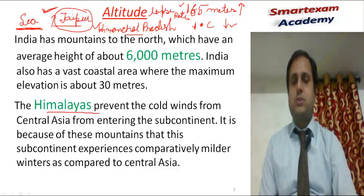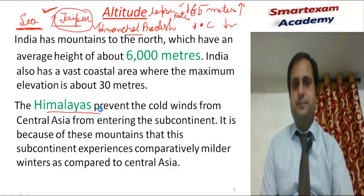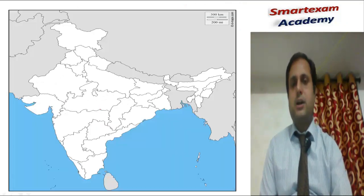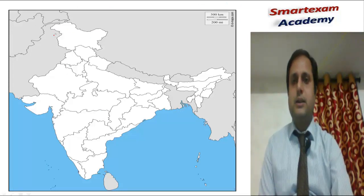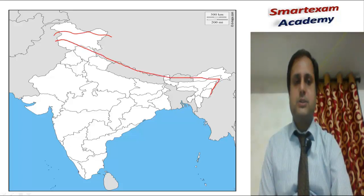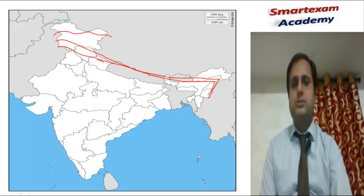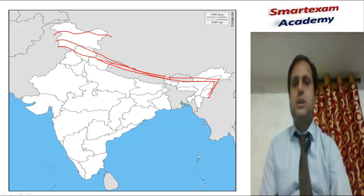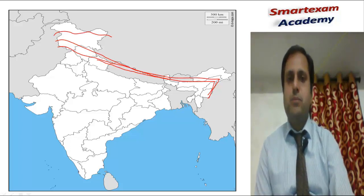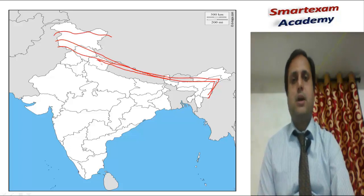Himalaya is a cause of defense for India. Himalaya is divided into three parts: Himadri, Himachal, and Shivalik. Himalaya acts as a defense for our country and also has a great influence on the climate of India. In the winter season, Himalaya protects India from the colder winds coming from Central Asia.